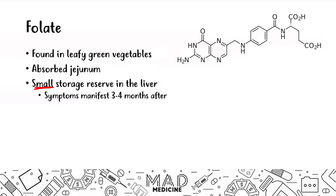You only have about three to four months worth of folate in your liver. If you have a deficiency, symptoms of megaloblastic anemia will start to manifest three to four months after becoming deficient in folate intake. After three to four months, the liver stores will become depleted and you will see defects and symptoms of folate deficiency.